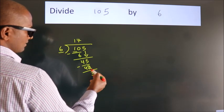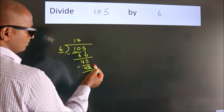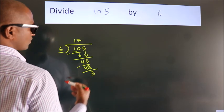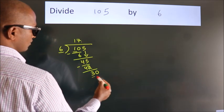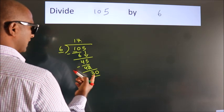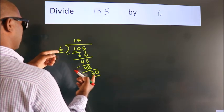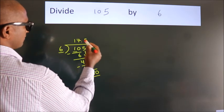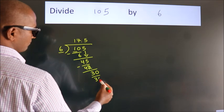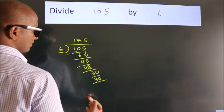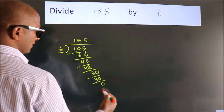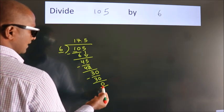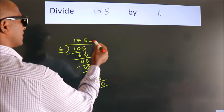After this, no more numbers to bring down. So what we do is put a dot and take 0, giving us 30. When do we get 30 in the 6 table? 6 times 5 equals 30. Now we subtract. We get 0. Here we got remainder 0, so this is our quotient.